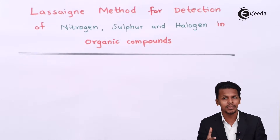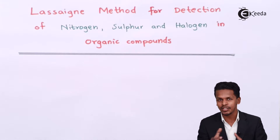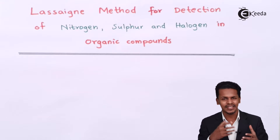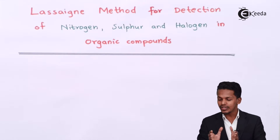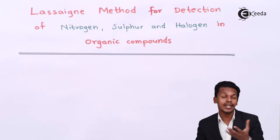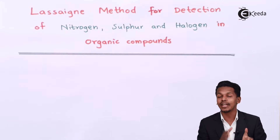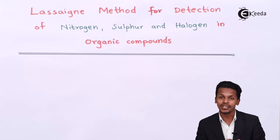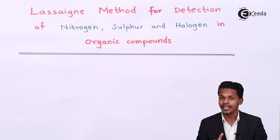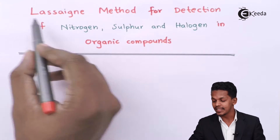Quantitative analysis, on the other hand, refers to determining the amount of the element present in the organic compound. Based on that distinction, we are going to perform qualitative analysis of nitrogen, sulfur, and halogen using Lassaigne's method.